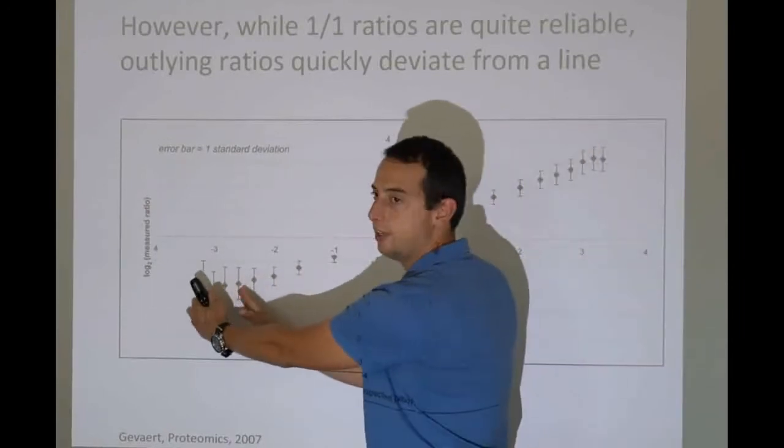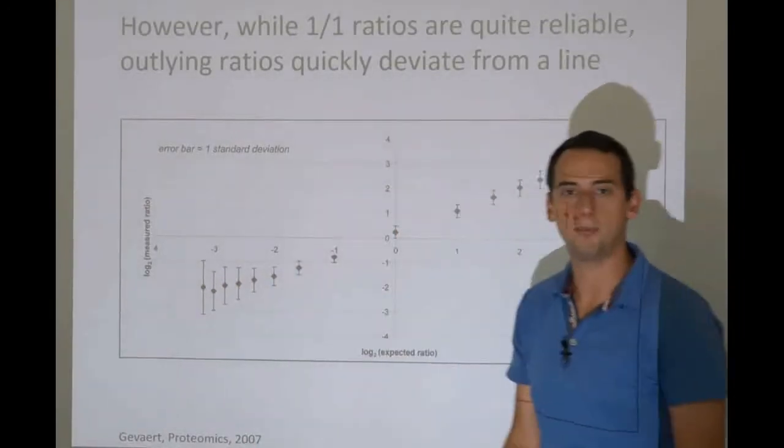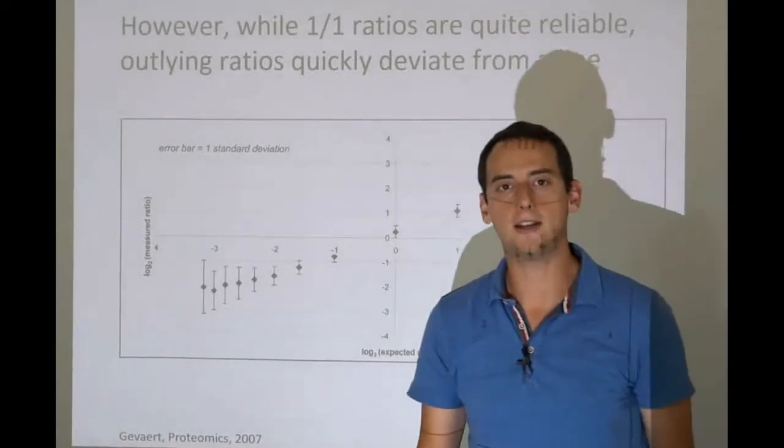and each measurement has a larger margin of error. So essentially, we want to measure somewhere here, where the mass spectrometer is really good at measuring things. You do not want to measure things here, because the mass spectrometer is much worse at measuring things, and it's an inherent limitation of any kind of detector.